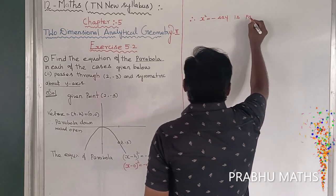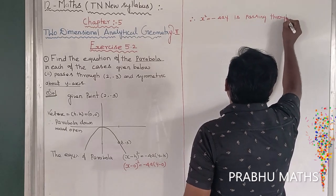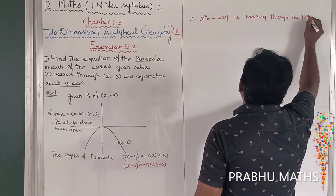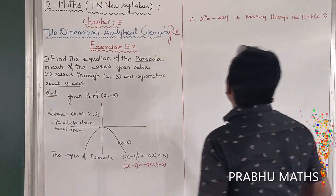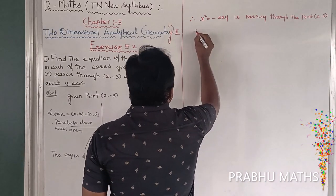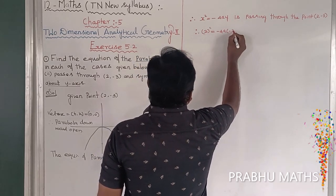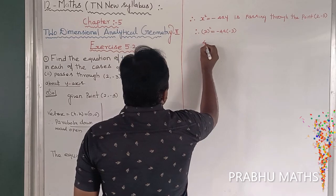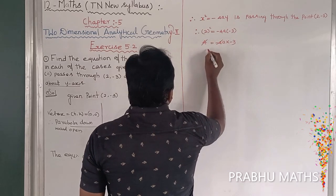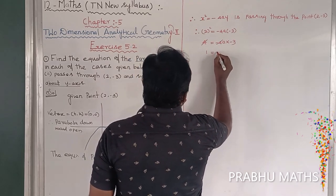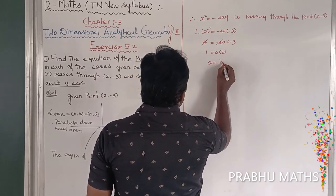The parabola is passing through the point (2, -3). Replace the values: x value 2, whole square is equal to minus 4a into y value minus 3. So 4 is equal to minus 4a into minus 3. The 4 cancels, giving 1 equal to a into 3. Therefore a is equal to 1 by 3.